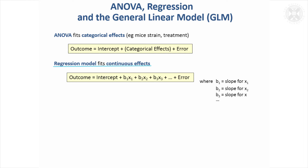With regression, you're modelling continuous effects — so measurements. These X's are measurements, so this is a multiple regression model, and you've got several slopes for the different measurements that you're fitting in the model.